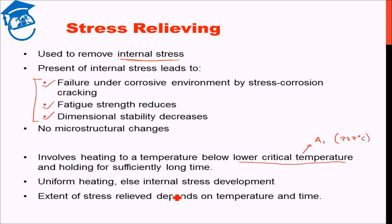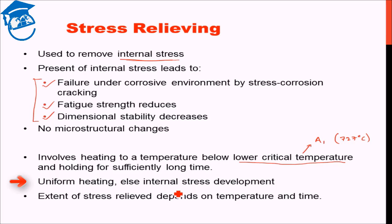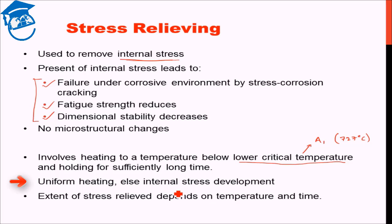Upon heating, internal stress is relieved. However, if the heating is not uniform, or during cooling we apply rapid cooling such that the outer layer cools much more rapidly than the inner layers, then the process itself can develop internal stresses due to non-uniformity of temperature. Therefore, it is of utmost importance that stress relieving — and indeed any heat treatment — is carried out under uniform heating conditions, meaning the whole body should heat up and cool down equally, both internally and externally.